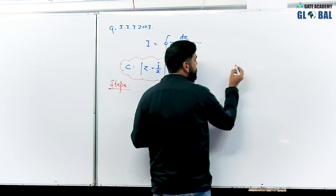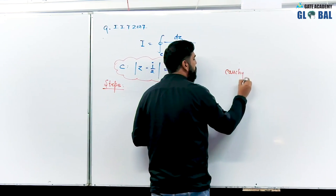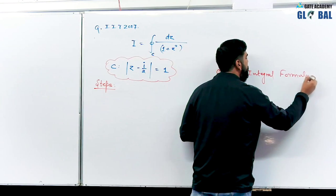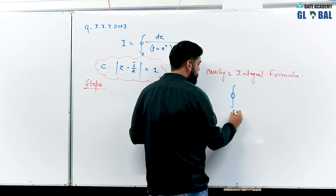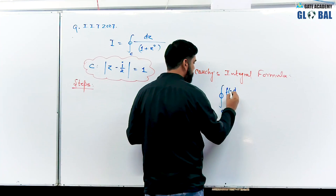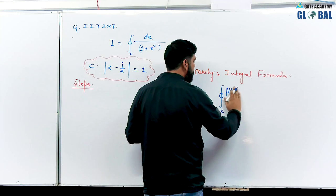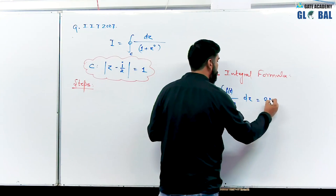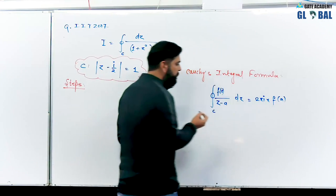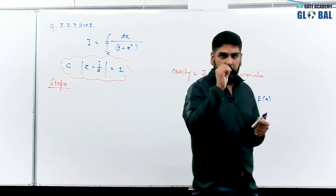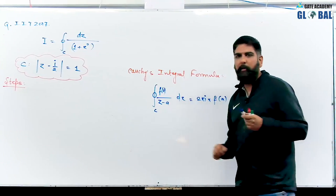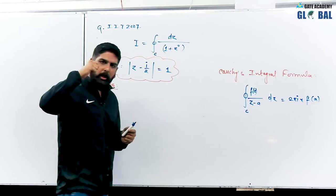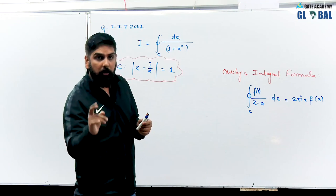What is Cauchy's integral formula? The closed integral over C of f(z) divided by z minus a, dz, equals 2 pi i into f(a). The very important thing here is the pole — the denominator set equal to zero gives us the pole of the function. The pole should be inside or on the closed curve C, not outside.